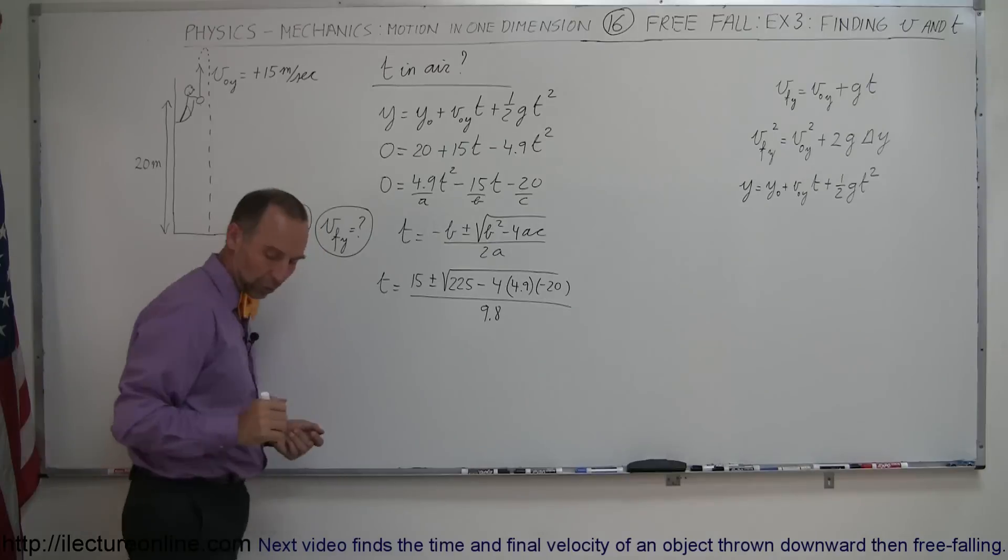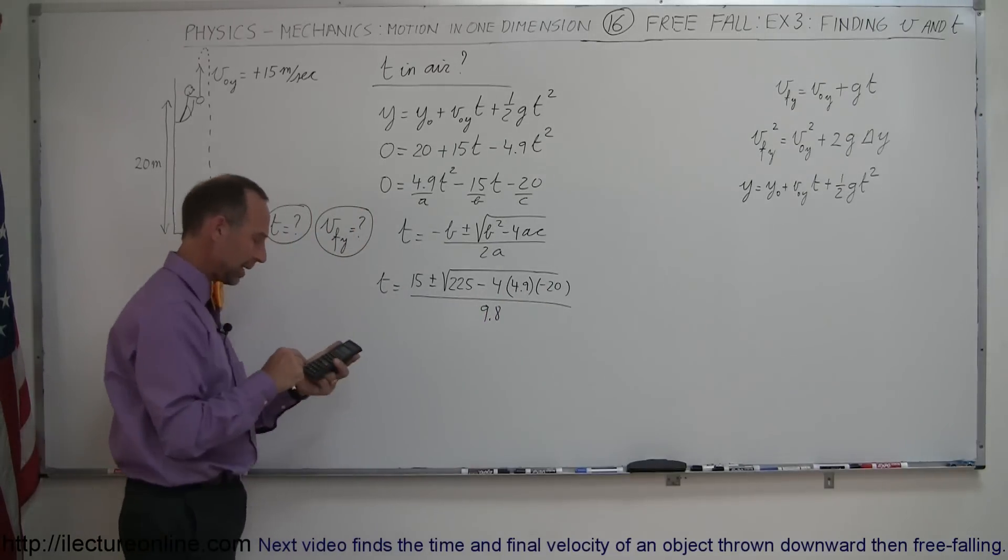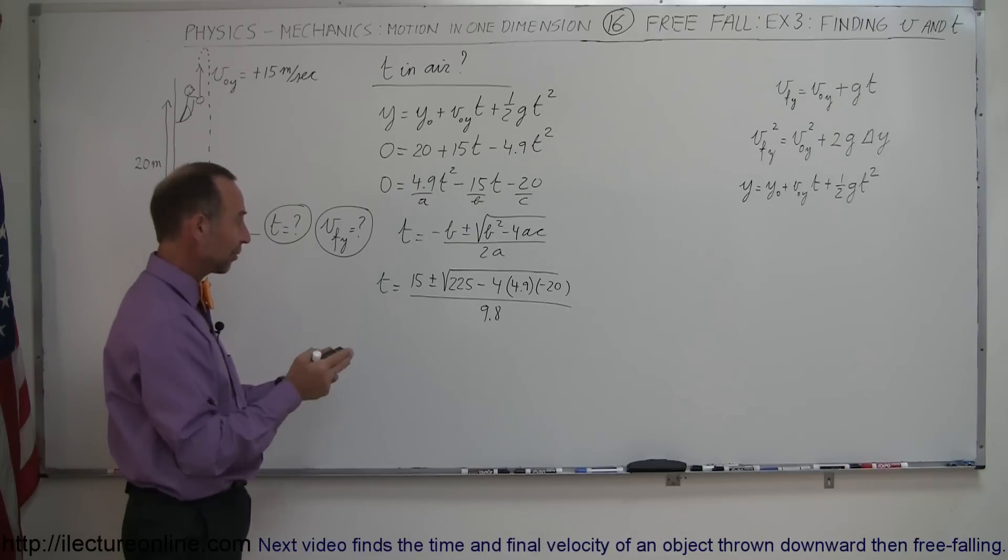So now we grab a calculator, these numbers multiplied together that would be 4 times 20 times 4.9, that's 392 plus 225.